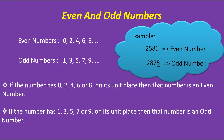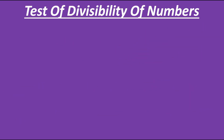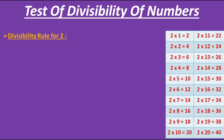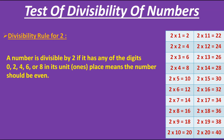Now let's move towards the test of divisibility of numbers. The first is the divisibility rule for 2. Before I tell you the rule, I just want you to focus on the table of 2. If you look carefully at the table, you will understand that the multiples of 2 are all even numbers. If you extend this table, you will get again only even numbers as multiples of 2. So the divisibility rule for 2 says that a number is divisible by 2 if it has any of the digits 0, 2, 4, 6 or 8 in its unit place — meaning the number should be even.